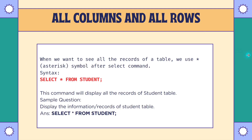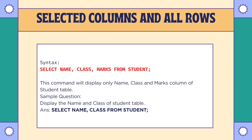Now moving to selected columns and all rows. Suppose I want to see only the name, class, and marks from the student table — I don't want to see the roll number column. We write: SELECT name, class, marks FROM student. We mention the column names separated by commas, then write the table name. A probable question: display the name and class of the student table — answer: SELECT name, class FROM student.